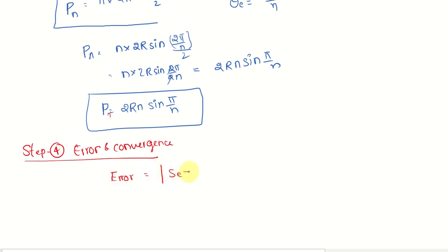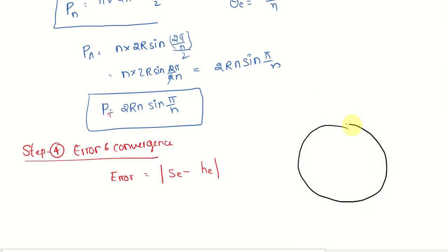The error is the sectoral arc length minus the element chord length. Looking at the circle, the element HE is the chord, and the sectoral length is the arc. The gap between the arc and the chord is the error for one element.